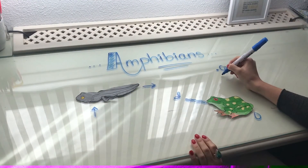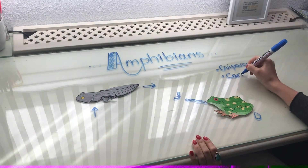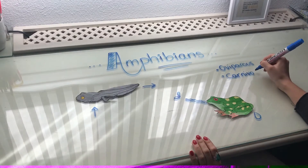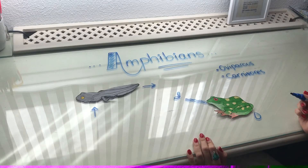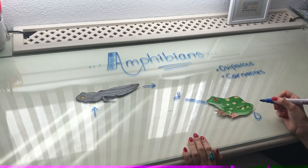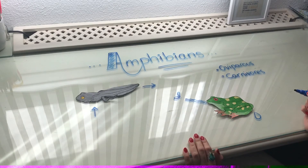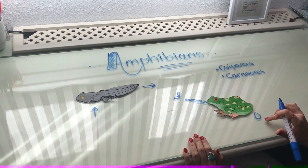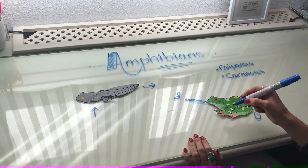We are also going to write the other characteristic we mentioned about amphibians — that they are carnivores. Amphibians need to live in humid areas so their skin and their eggs don't dry out. They have to live near the water. They can also live on land, but remember they always need water so their skin and eggs can develop.